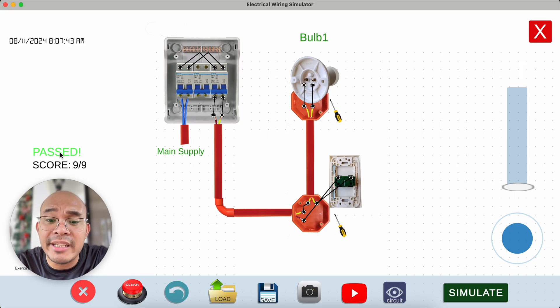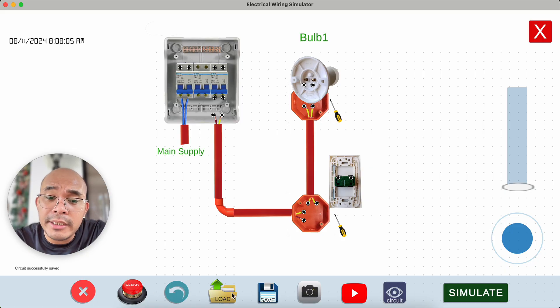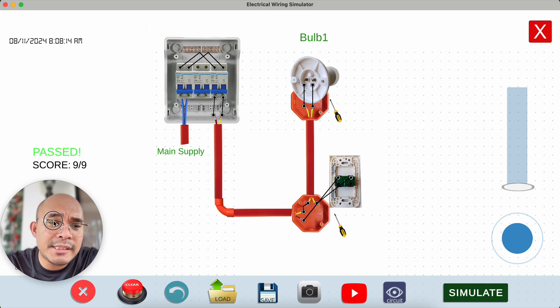Before that, there is also another feature here. We have here the save. The users can save the wires. If they completed the wiring for this moment, they can save that wire. It says here, circuit successfully saved. Now, if we're going to clear all of this wiring, clear, and then load it again, we will be able to see the loaded, the saved wire. And then, click simulate again. So, we passed.